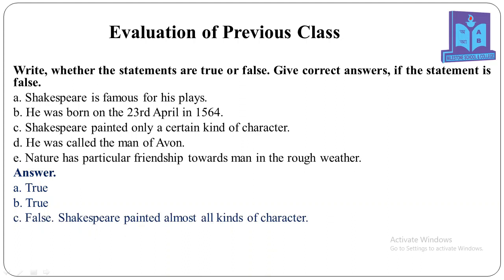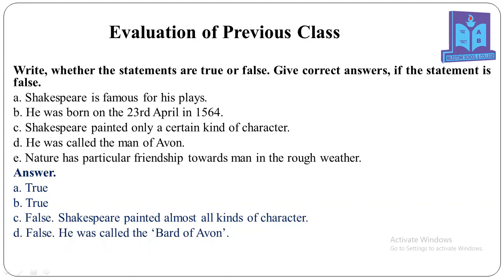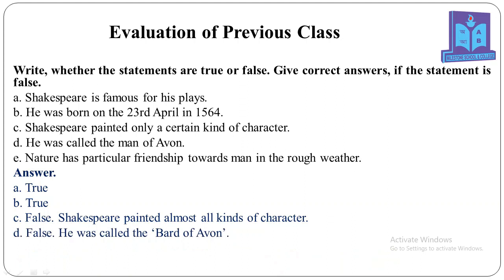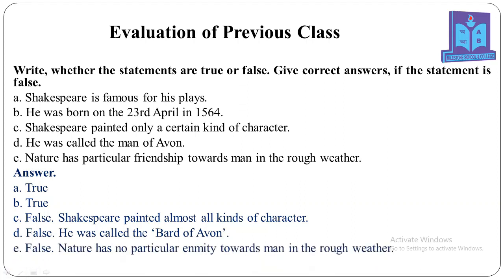D: He was called the Man of Avon — this answer is false. The correct answer is he was called the Bard of Avon. And the last one, E: Nature has particular friendship towards man in the rough weather — it's also false. The right answer is nature has no particular enmity towards man in the rough weather. This is all about the previous lesson, and now we are going to start our new lesson today.